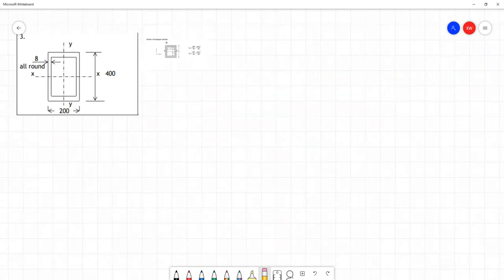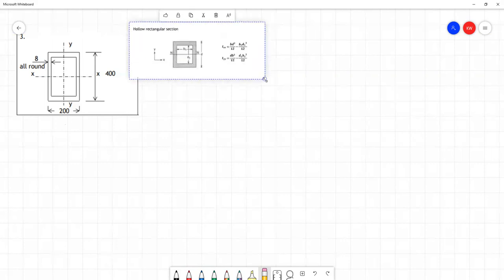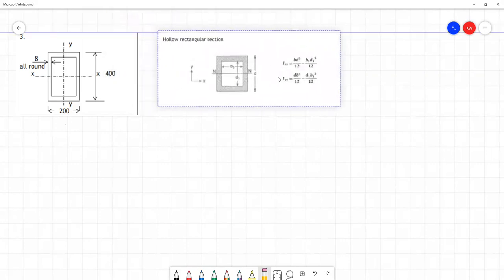Fortunately, this is something where we have a standard formula to use. I'm going to paste in this formula here. We find this on page 28 of the course notes, and it tells us how to find the second moments of area for such a shape.